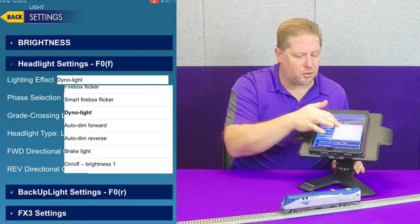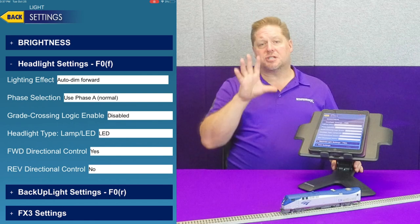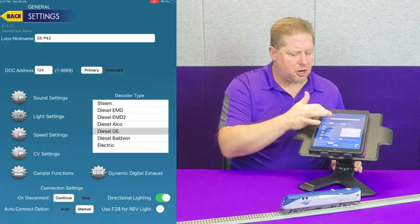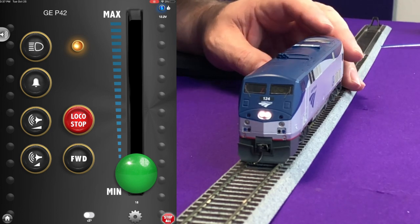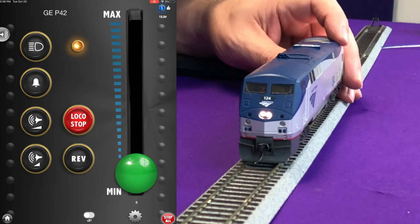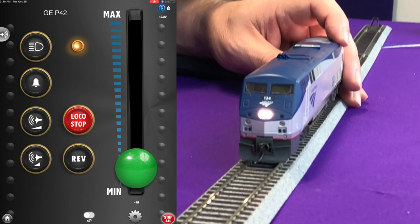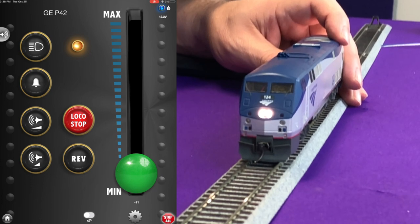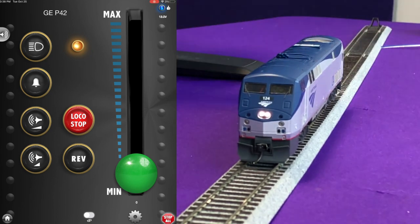Next we have auto dim forward and auto dim reverse. This automatically dims the light when stopped. When you start moving in the forward direction it maintains its dimness, but when you change directions and move in reverse, the dim-in-forward light actually brightens up. This way you can have an auto-switching light for a switcher, where the headlight dims automatically in reverse and the reverse light dims automatically in forward — so whichever direction the locomotive moves in, the opposite light dims.